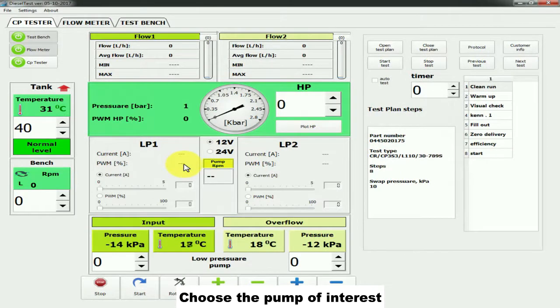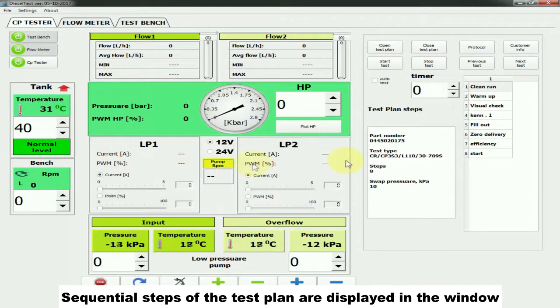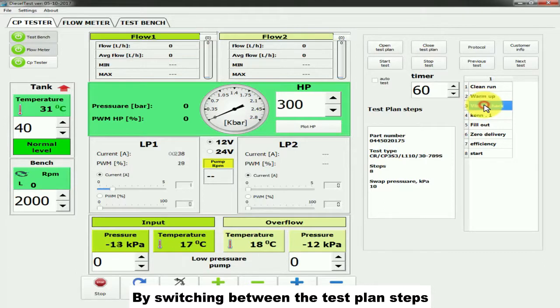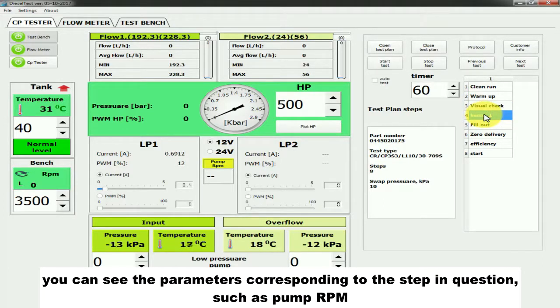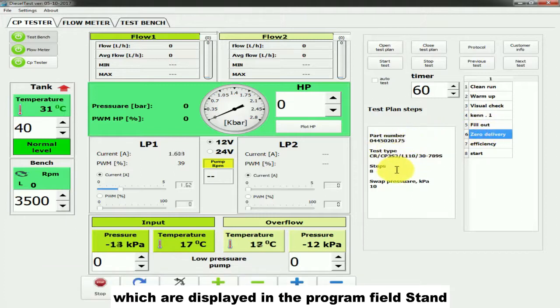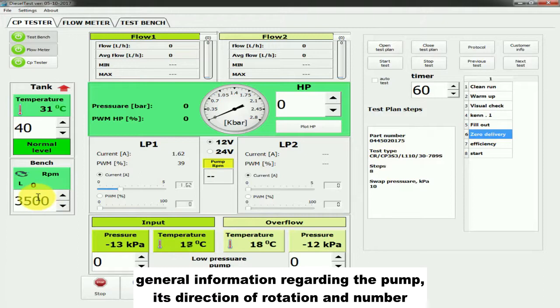Sequential steps of the test plan are displayed in the window. By switching between the test plan steps, you can see the parameters corresponding to the step in question, such as pump RPM, which are displayed in the program field stand, and general information regarding the pump, its direction of rotation and number.